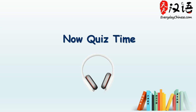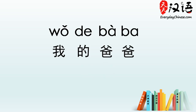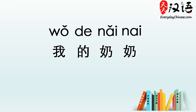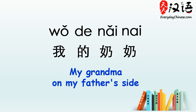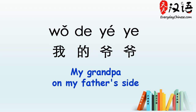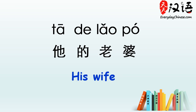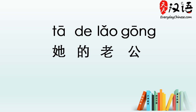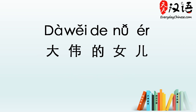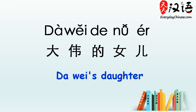Here's a little quiz for you. Pay attention to whom the person is talking about. 我的爸爸 — My father. 我的妈妈 — My mother. 我的奶奶 — My grandma on father's side. 我的爷爷 — My grandpa on father's side. 她的老婆 — His wife. 她的老公 — Her husband. 丽丽的妈妈 — 丽丽's mother. 大伟的女儿 — 大伟's daughter.